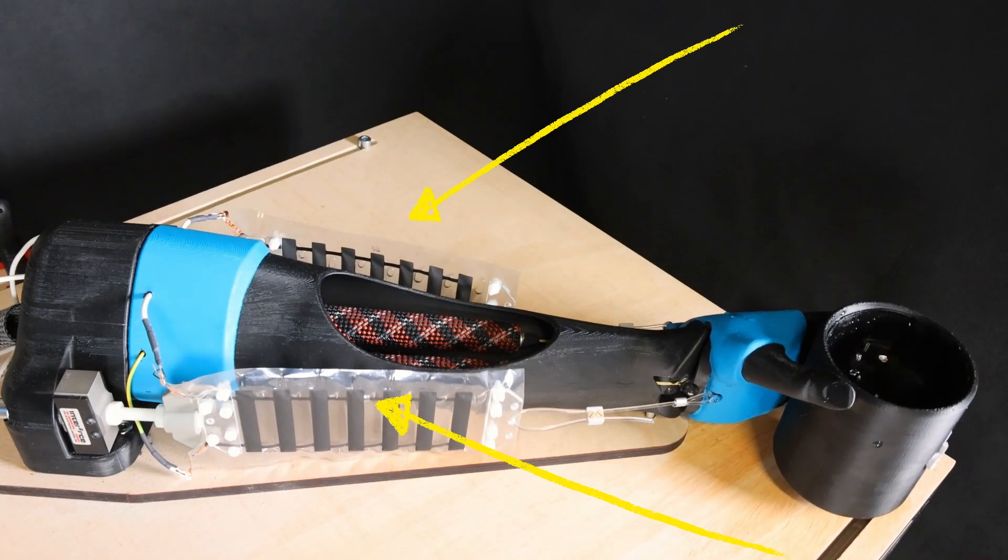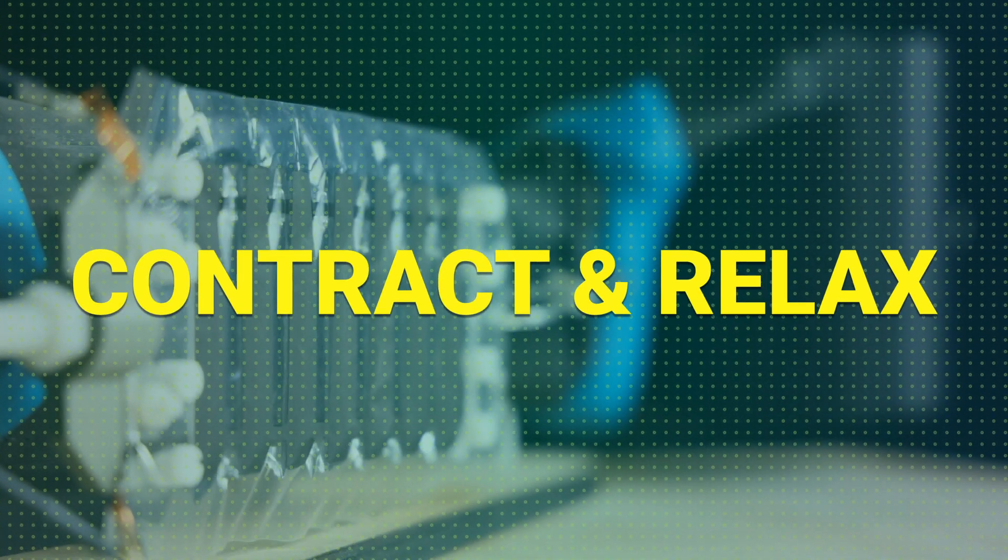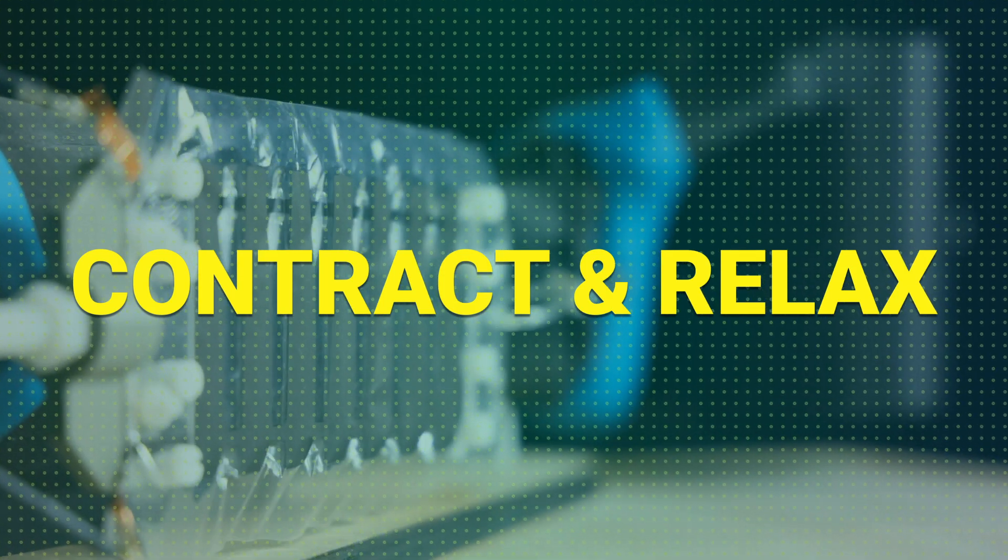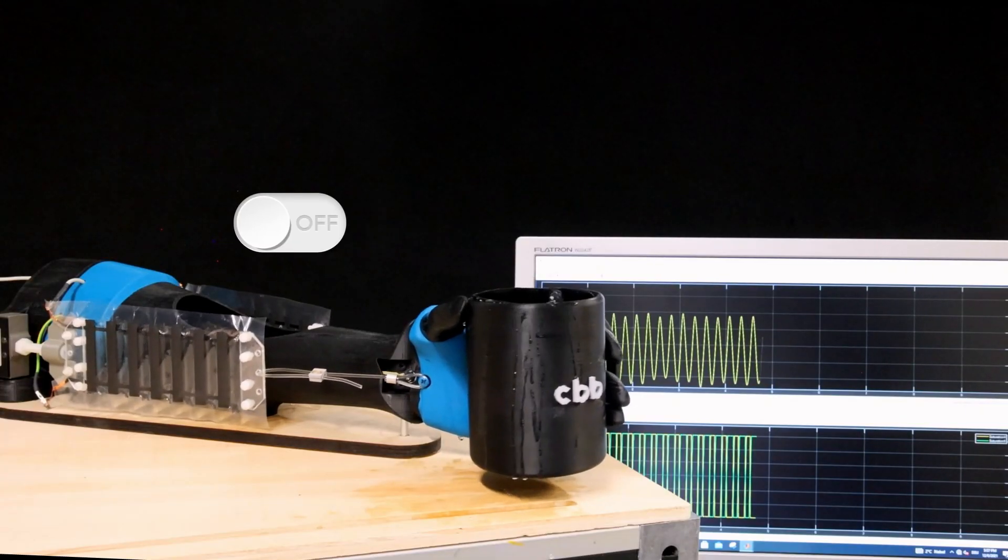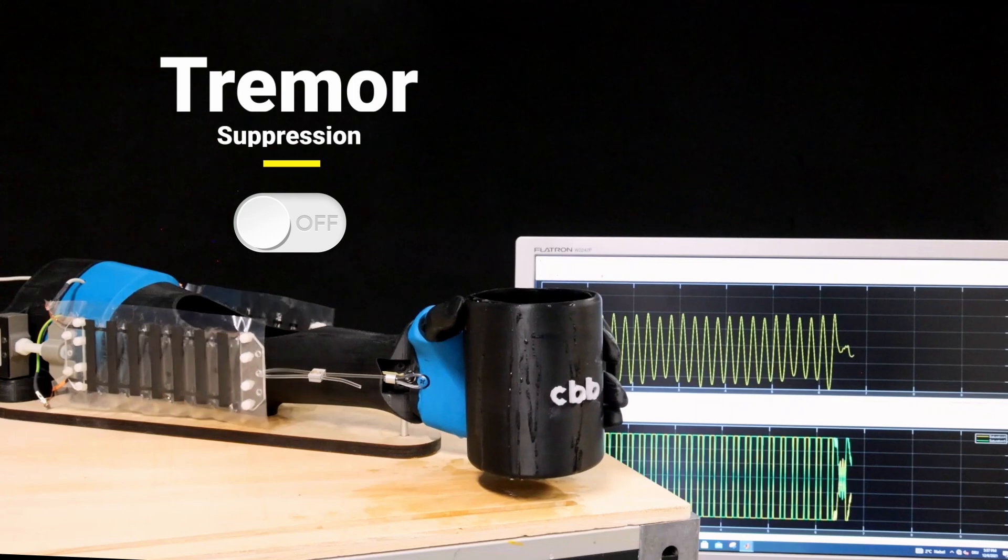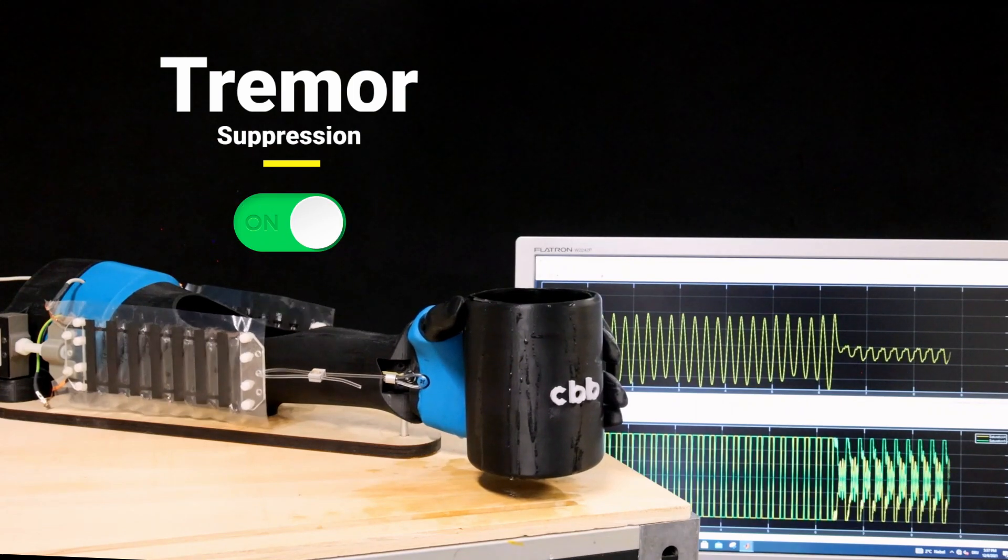Artificial muscles on either side of the forearm contract and relax to suppress the involuntary shaking of the wrist and hand. In this way, the robotic arm avoids spilling whatever is inside the cup.